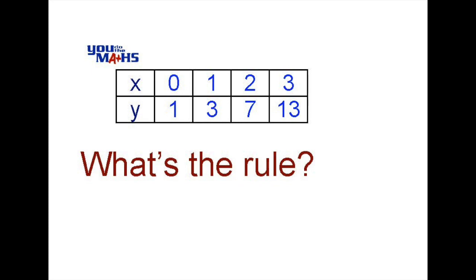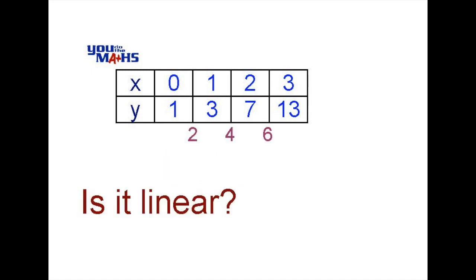First of all let's have a look at the first difference and see if the pattern is linear. You can see that the table has a difference of 3 minus 1 equals 2 and 7 minus 3 equals 4. So that's not a linear pattern because the first difference is not consistent.